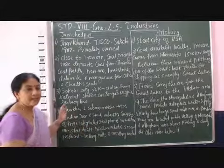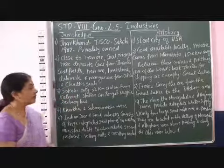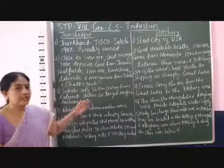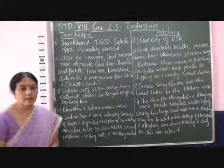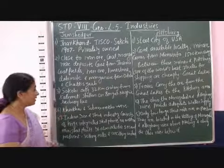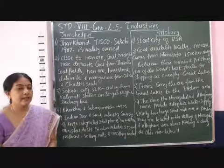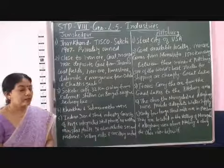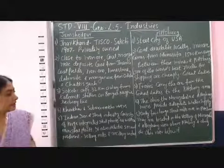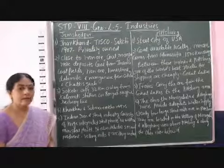Similarly in Jamshedpur, train facilities are very common — Sakchi is only 32 kilometers away from Kalimati station on the Bengal-Nagpur railway line. So train facilities are common in both cities, and raw material availability is common in both. Jamshedpur is also located near the rivers Kharkai and Subarnarekha, so adequate water supply is obtained from these rivers. Similarly, Pittsburgh is also located near rivers like the Ohio, Monongahela, and Allegheny rivers, which also provide adequate water supply to the steel industry.